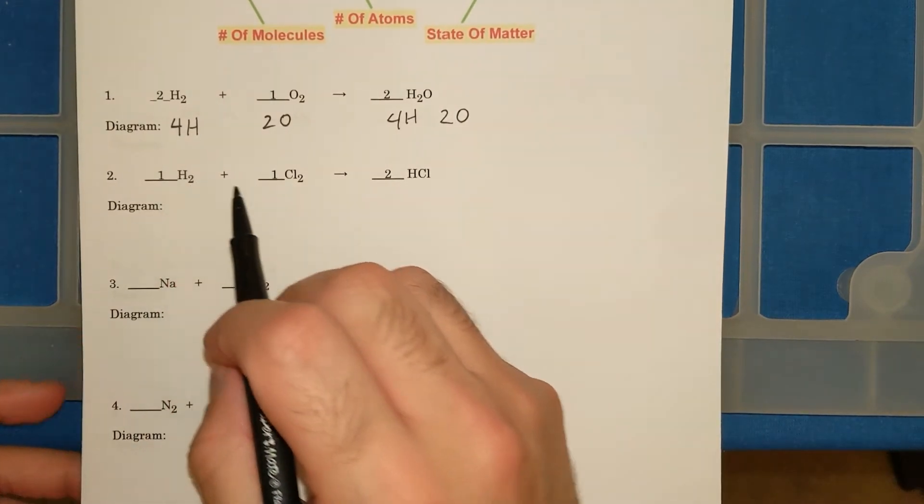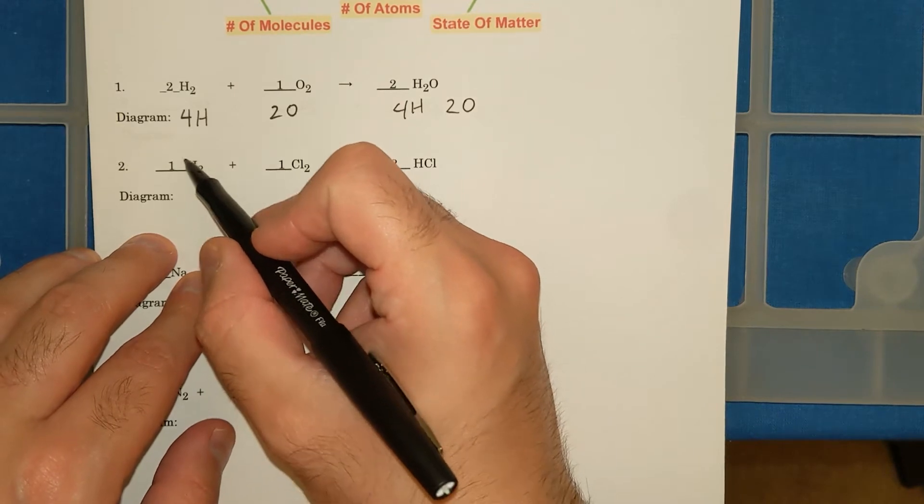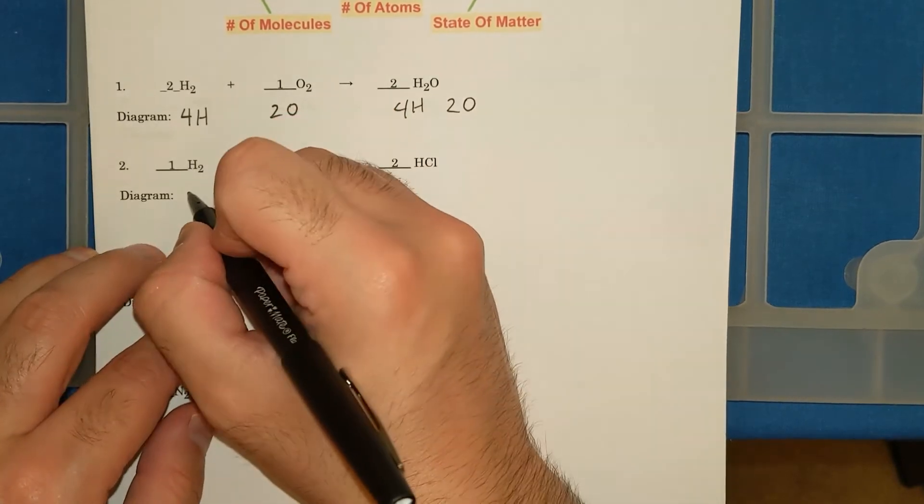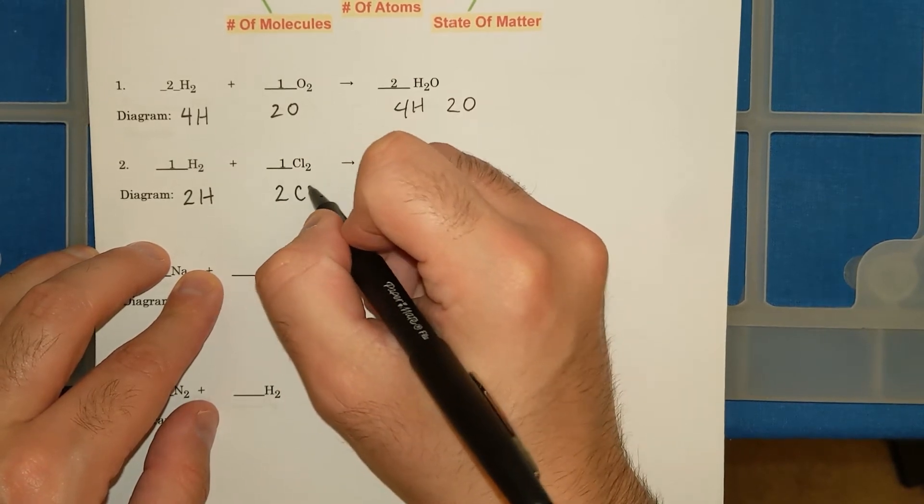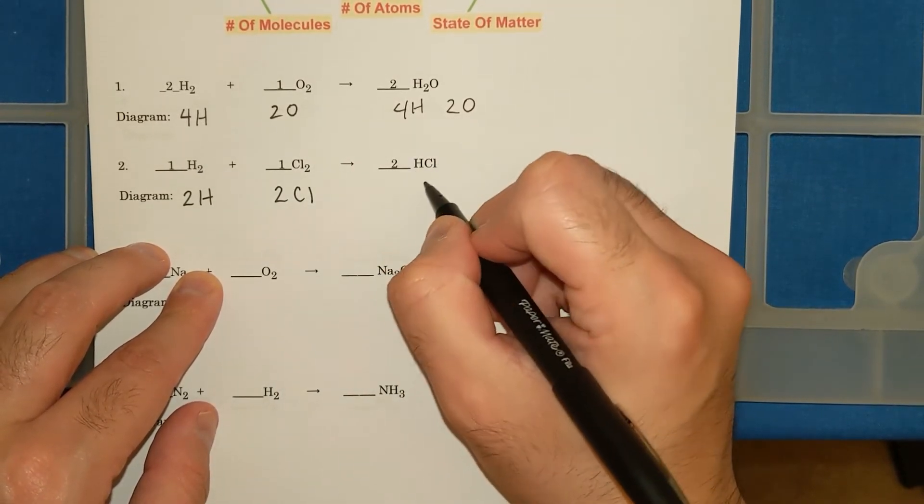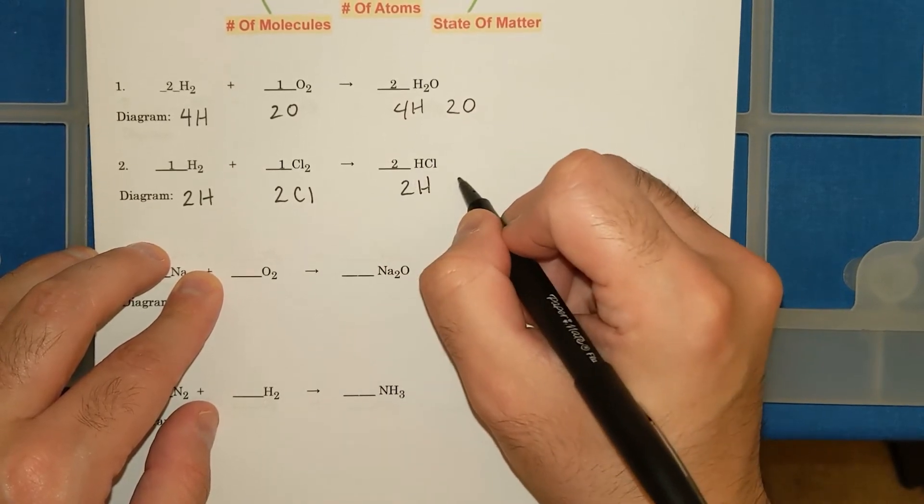I'm going to do the same thing for number 2 here. I have 1H2, that little subscript 2 means I have 2 H's. Big 1 in front means I have 2 H's. 1Cl2 means I have 2 Cl's.